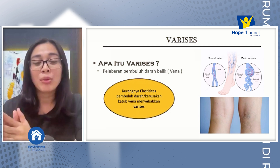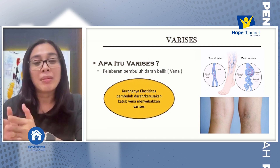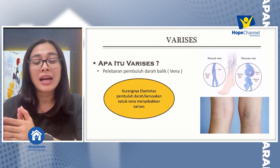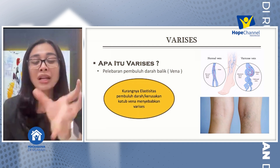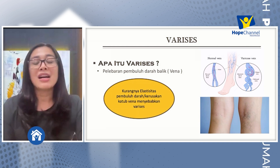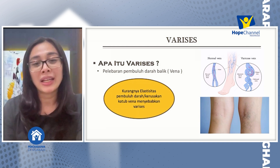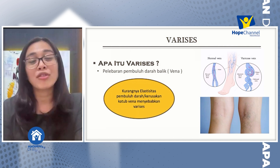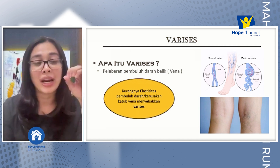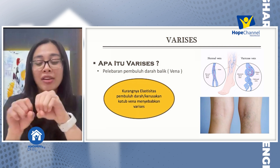Sedangkan pembuluh darah vena atau pembuluh darah balik, sesuai dengan namanya, adalah pembuluh darah yang berfungsi untuk mengantarkan darah yang sudah menyebar ke seluruh tubuh untuk kembali ke jantung. Kemudian ada yang disebut dengan pembuluh kapiler, yaitu pembuluh darah yang fungsinya adalah untuk menyambungkan antara pembuluh darah nadi atau arteri dengan pembuluh darah vena.